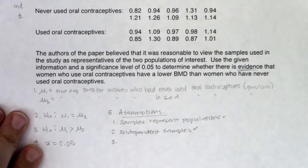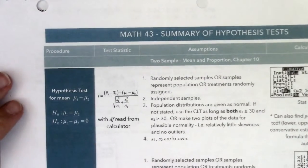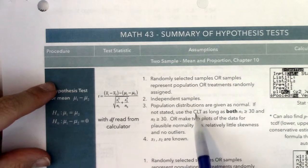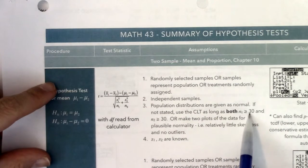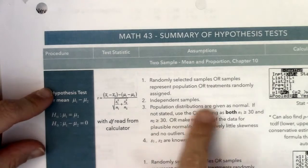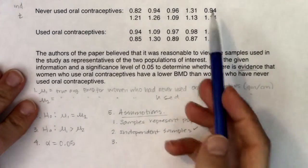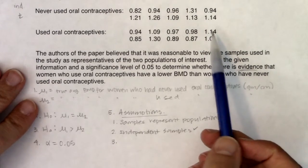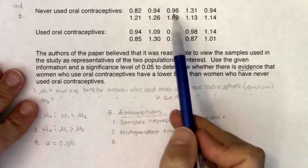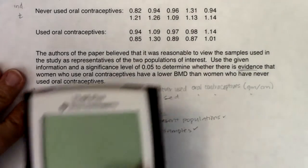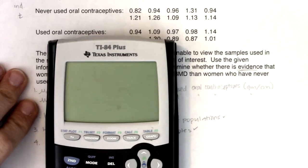Now normality — the big one we're always looking for. I could either have that my population distributions are normal, or if that wasn't stated, the CLT can kick in as long as both sample sizes are 30 or higher. Or we might have to make two plots for plausible normality, which means relatively little skewness and no outliers. The word 'normal' is nowhere in this problem, and with only 10 women in each group, the CLT doesn't apply, so we go to the third option — two box plots.